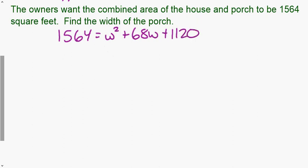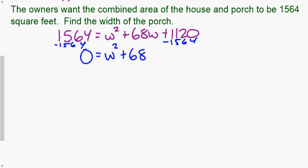To solve any quadratic equation it must equal zero. Subtract 1564 from both sides: the left side cancels and we're left with w² + 68w − 444 = 0. To solve this quadratic we need to factor it, so we set up the diamond with negative 444 on top and positive 68 on the bottom. Since it's a negative product, we know it's one positive and one negative.